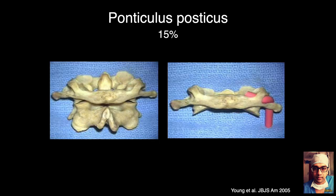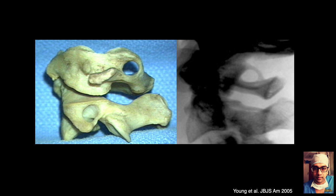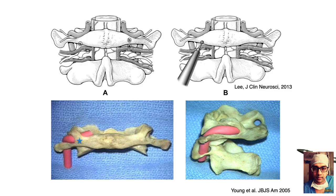Be careful of the ponticulus posticus anomaly when placing posterior arch screws — it is seen in about 15% of patients and can be identified on lateral X-ray as an arcuate foramen. If you haven't anticipated this anomaly and place a posterior arch screw through the middle, the screw will go directly through the vertebral artery.